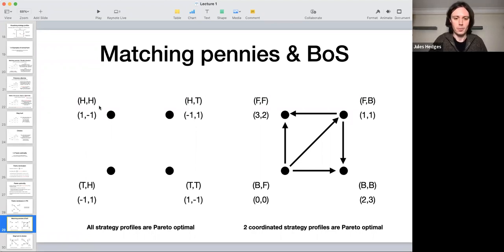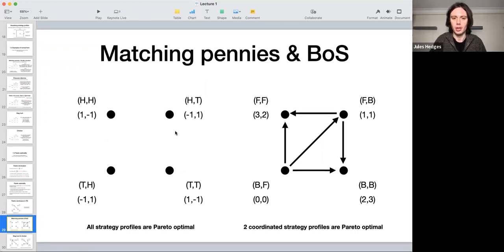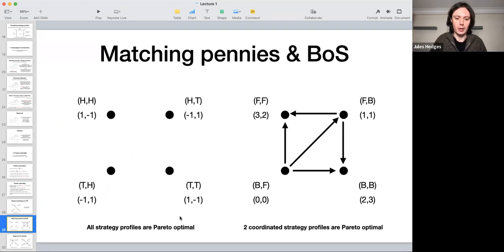Matching pennies, you will find that all strategy profiles are Pareto optimal. None of these Pareto dominates anything else, which makes them all optimal. So this is a kind of failure of Pareto optimality to be a good measure of optimal because in this example, it tells you absolutely nothing. It says everything is just as good. It's kind of reflecting the symmetry or circularity of this game.